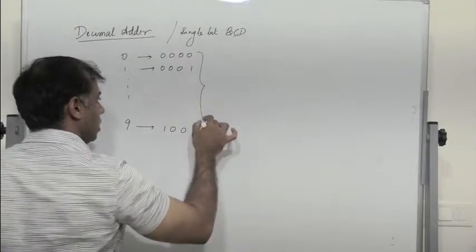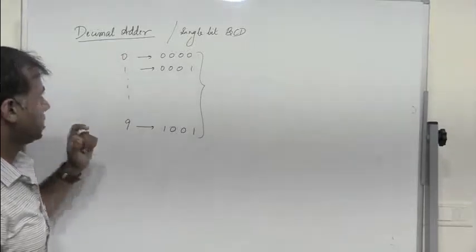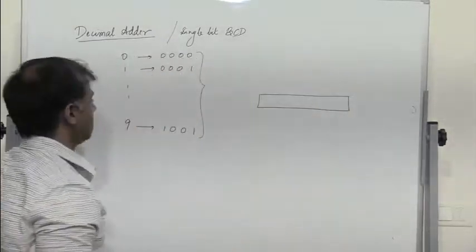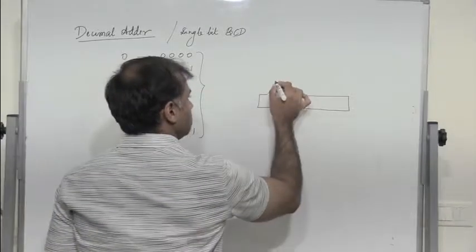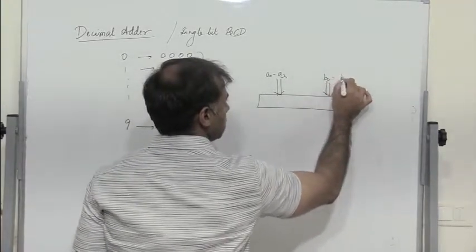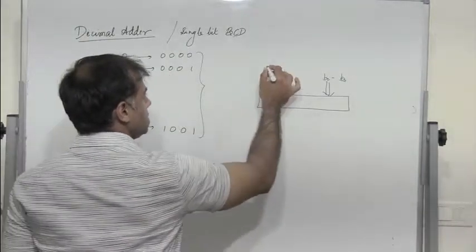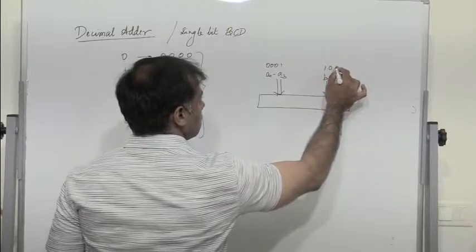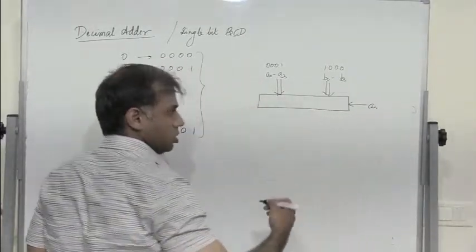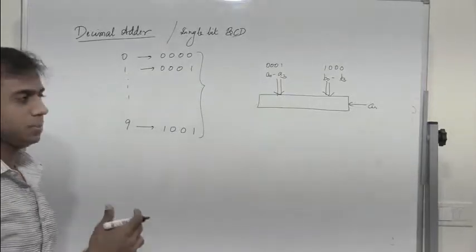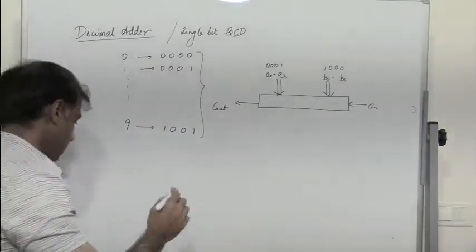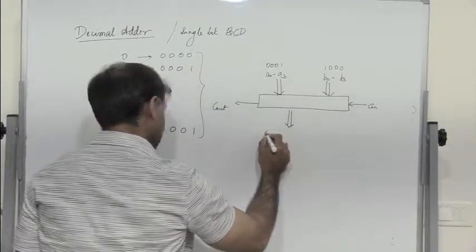If we want to add two BCD numbers, we have 4 bits A0 to A3 and 4 more bits B0 to B3. For example, let A be 0001 and B be 1000. There can be a carry in from the previous stage, and finally we get a carry out to the next stage along with the coded decimal output.